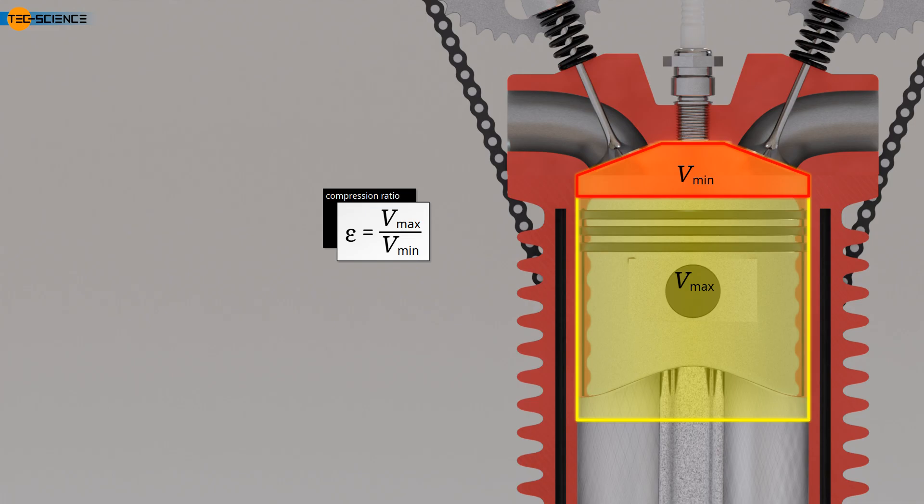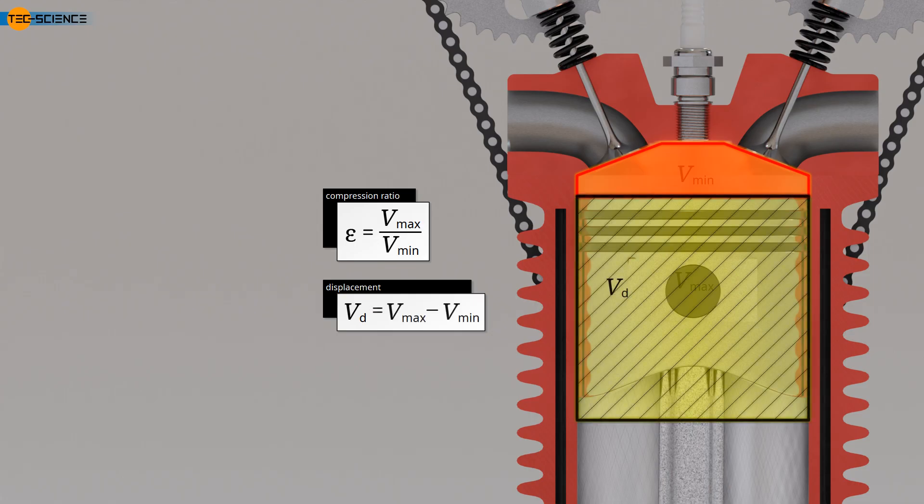Another important characteristic of an engine cylinder is the so-called displacement. This represents the displaced cylinder volume of the piston as it moves from the bottom dead center to the top dead center. The displacement is therefore the difference between the maximum cylinder volume at the bottom dead center and the minimum cylinder volume at the top dead center. The larger the displacement, the more fuel is ultimately brought to the explosion, and the greater the force acting on the piston. This increases the engine's torque and power. Consequently, fuel consumption also rises.